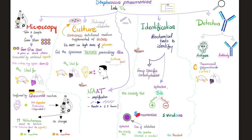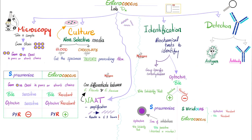Bile will kill Streptococcus pneumoniae within minutes — that's why it cannot survive in your intestines. Now, today's topic: enterococcus. How can we diagnose it microscopically? It is very similar to Streptococcus pneumoniae, but here are the differences. Streptococcus pneumoniae is sensitive to bile, but enterococcus is resistant to bile — it can survive bile. Streptococcus pneumoniae is optochin-sensitive, but enterococcus is optochin-resistant, just like the viridans. However, Streptococcus pneumoniae is PYR-negative, Streptococcus viridans is PYR-negative, but enterococcus is PYR-positive.